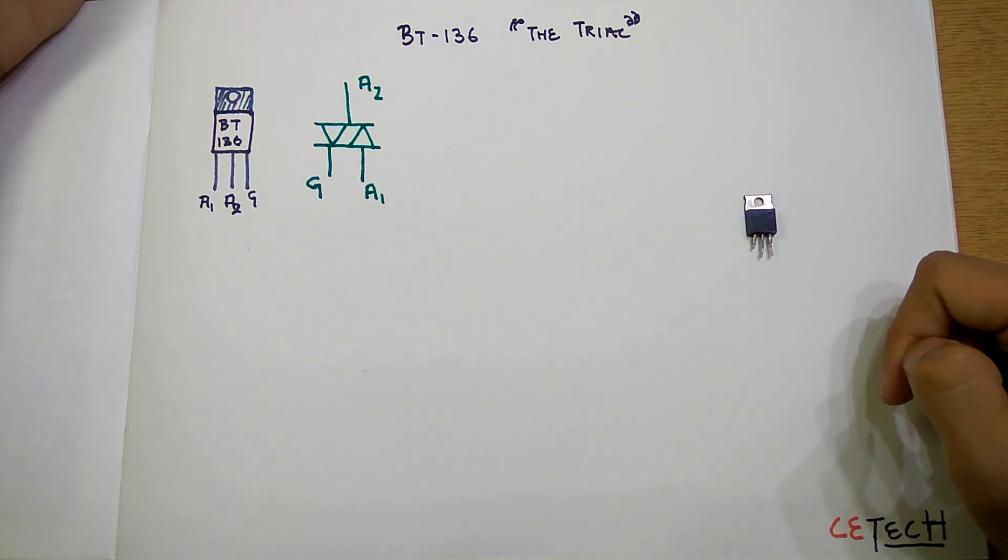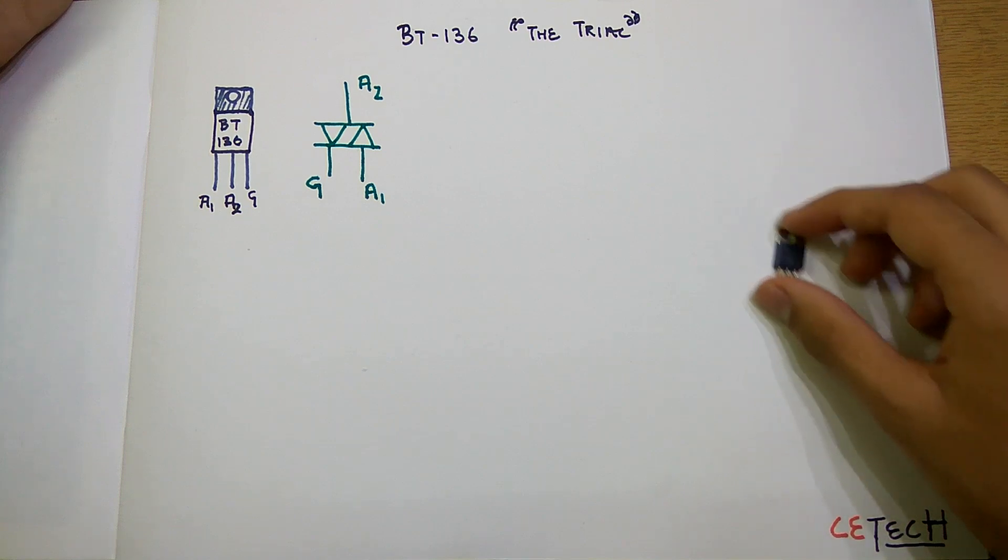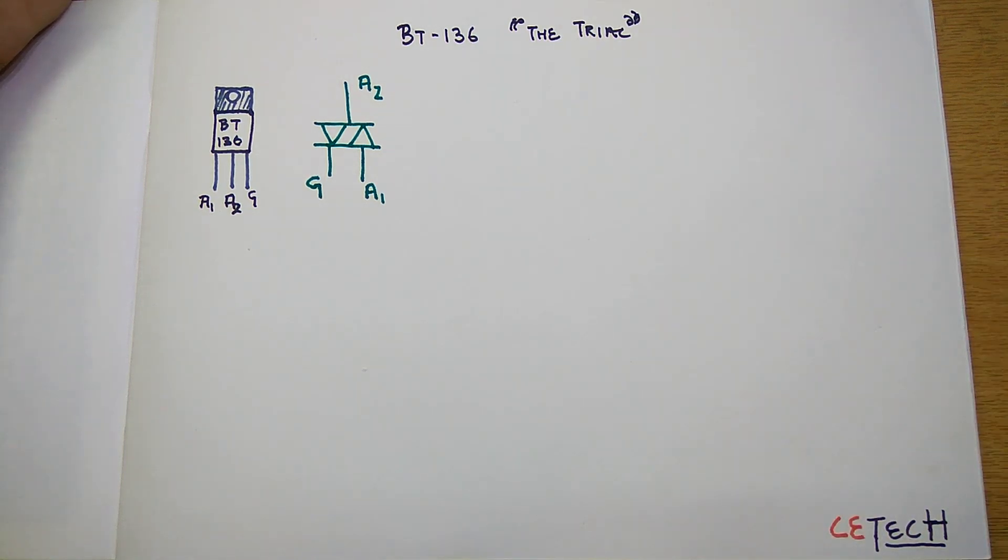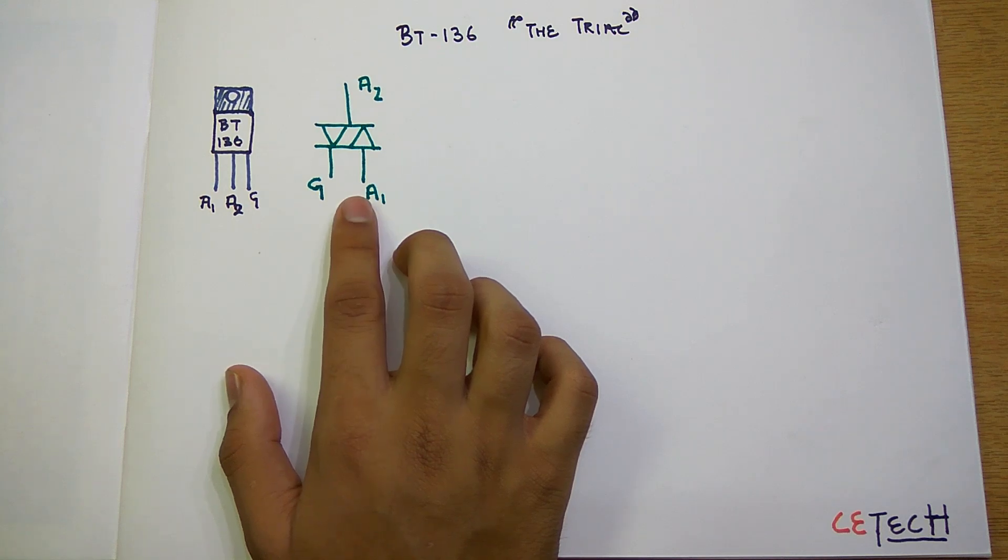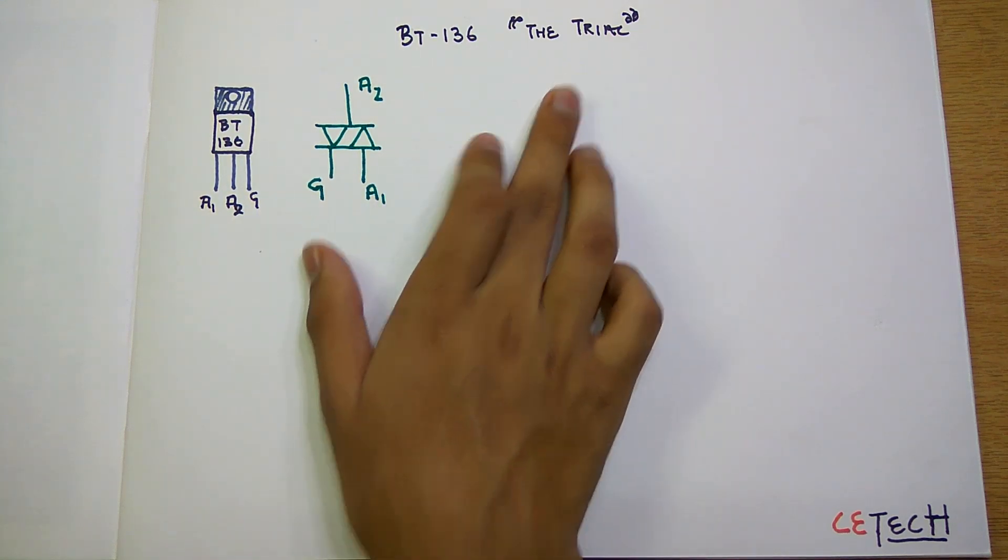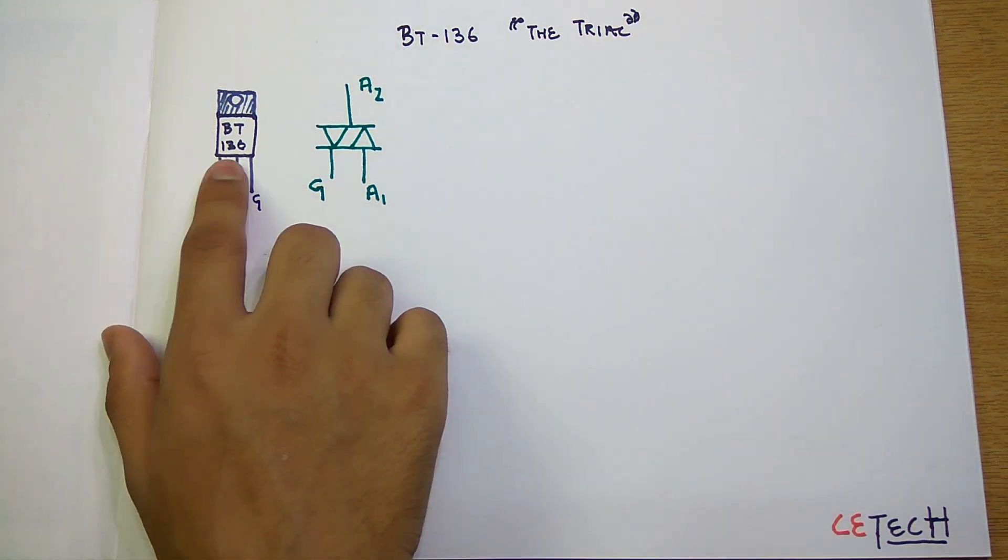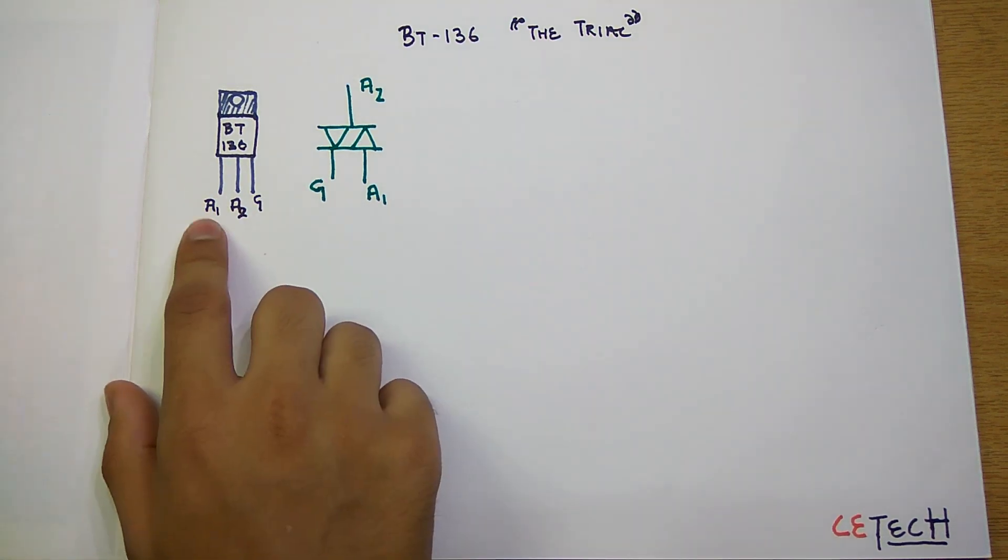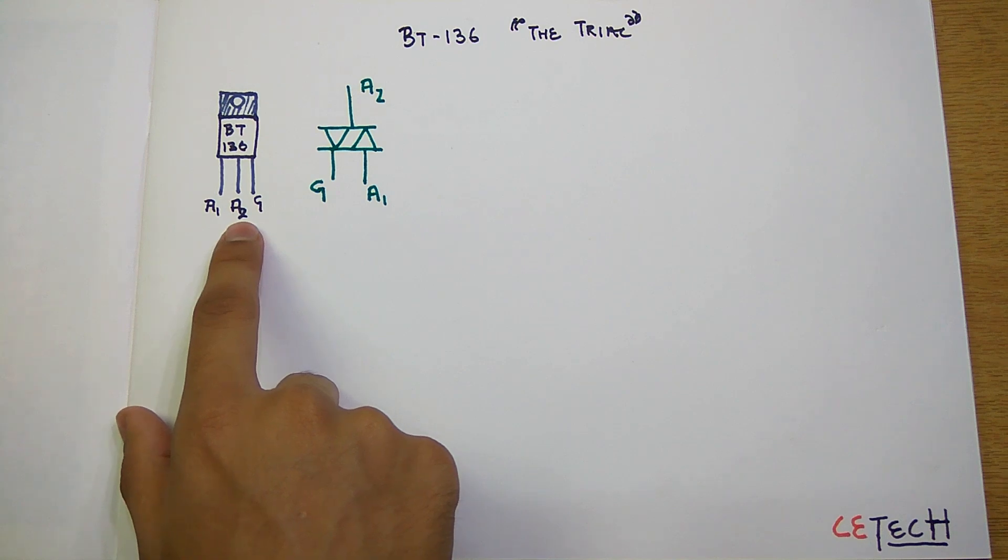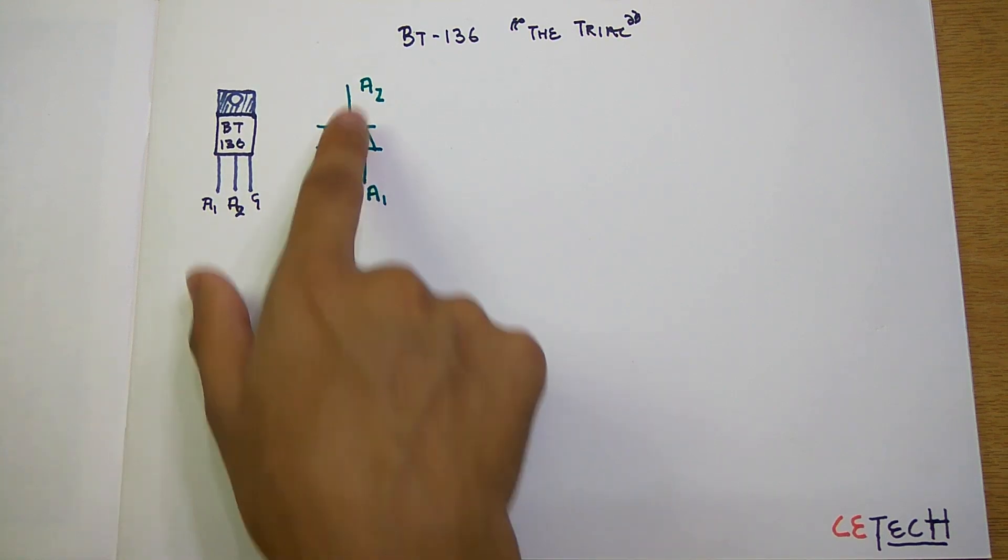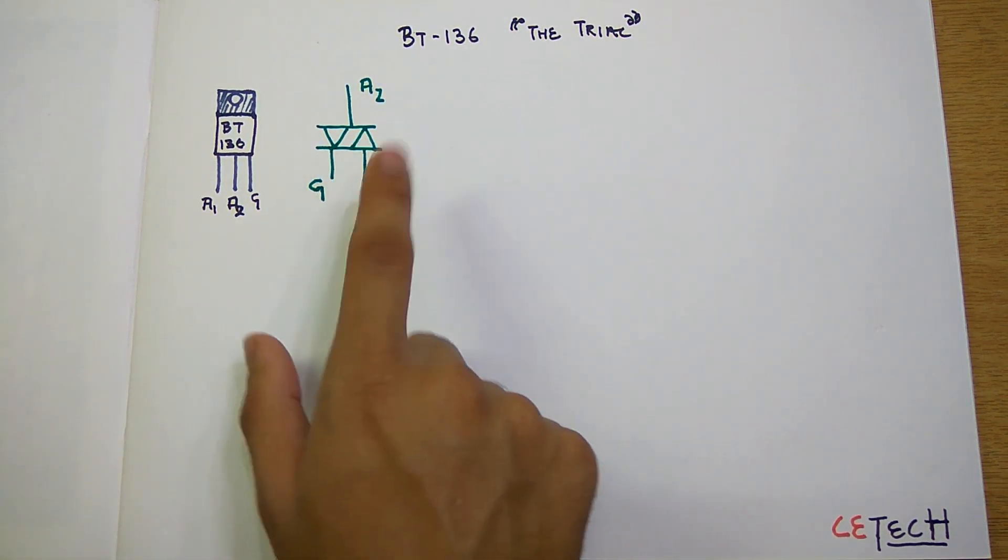So this is what the diagram of this MOSFET, or the TRIAC you may say, looks like. This is the original thing. There are three pins: pin one, pin two, and the gate. In this diagram we see the gate, A1, and A2.